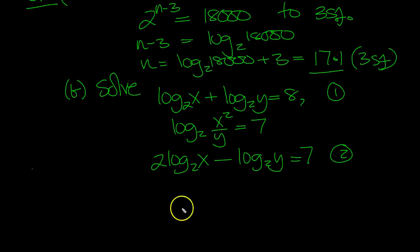So if we just add them, we get 3 log 2 of x is equal to 15. So log 2 of x is equal to 5. 15 over 3 is 5.